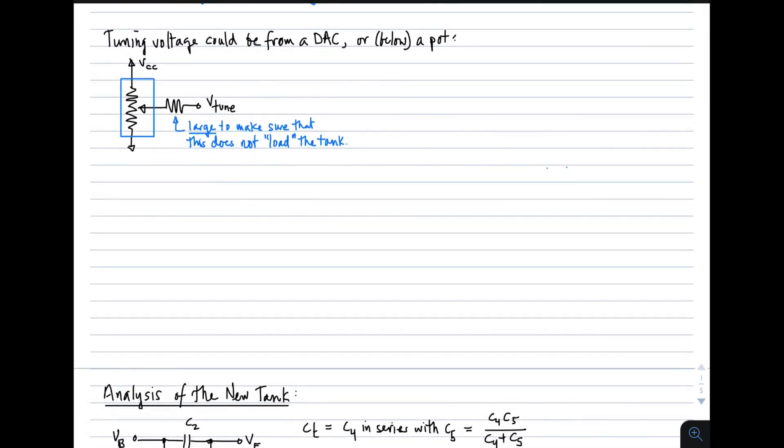You might ask where the tuning voltage comes from. One way would be simply to use a digital to analog converter, so under computer control you could set a tuning voltage. Or more simply, you could just use a potentiometer, a variable resistor with a knob on it. If you do that, you'd want to put a big resistor right here so that device does not load the tank. It's important to see high impedance looking out that way so that the circuit creating the tuning voltage does not interfere with the tank operation.